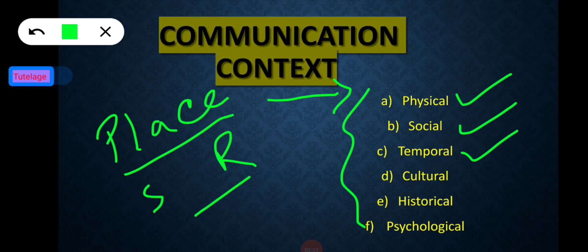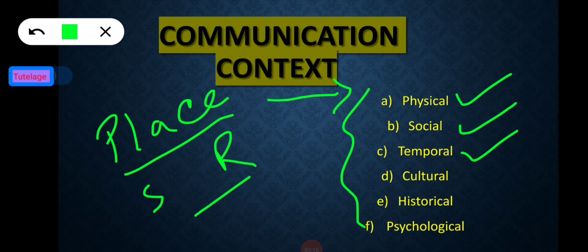The third dimension is temporal context. Communication gets affected by the time at which it takes place. There will be changes in communication depending upon the time of day — the energy levels of a person are different at different times, which affects mood and emotions. For example, students are more attentive during the first lecture than the last lecture of the day.